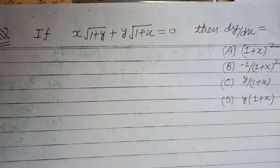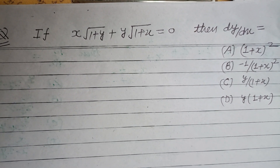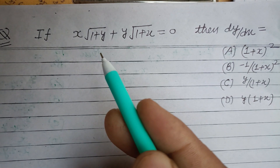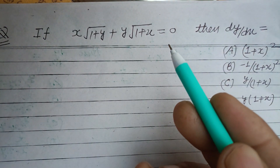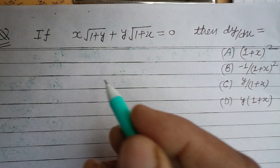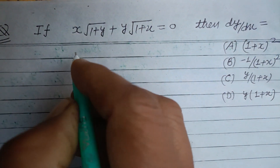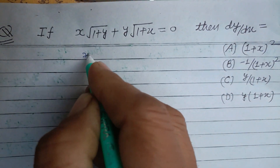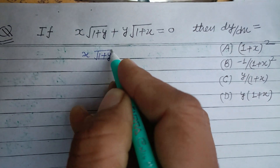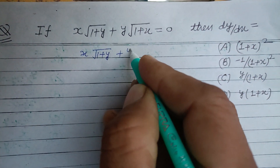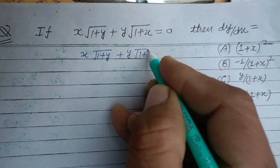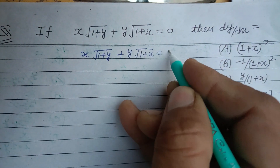Hello viewers, warm welcome to this YouTube channel. If x√(1+y) + y√(1+x) = 0, then find dy/dx. So here x√(1+y) + y√(1+x) is given equal to 0.